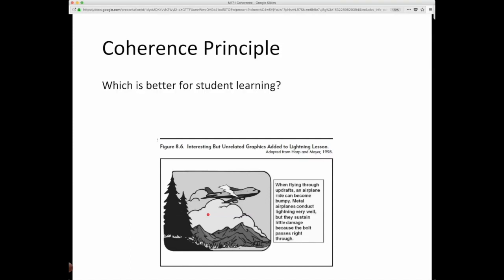So which is better for student learning, when extraneous entertaining material is included or when extraneous entertaining material is excluded? So by extraneous, we mean not relevant to the instructional objective or the learning objective, or as this caption says, unrelated to the learning objective.